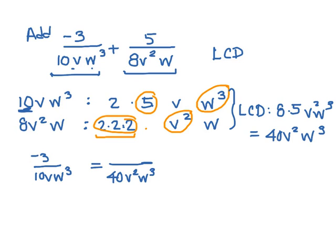I need to multiply my denominator by what? Let me go ahead and write that negative 3 there. To get 10 to 40, I needed to multiply it by 4. To get v into v squared, I get v, and then I already have a w cubed, so I'm okay. This means I have to multiply the numerator by the same thing, so I have negative 12v up here.